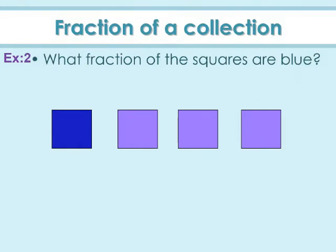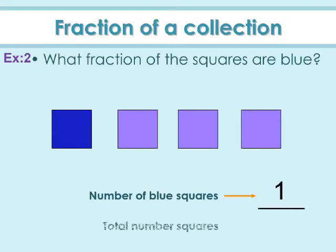Example 2: What fraction of the squares are blue? A collection of four squares is given; out of four squares, one is blue. To write the fraction for blue squares, write number of blue squares by total number of squares, which is one by four. So one fourth of the squares are blue.